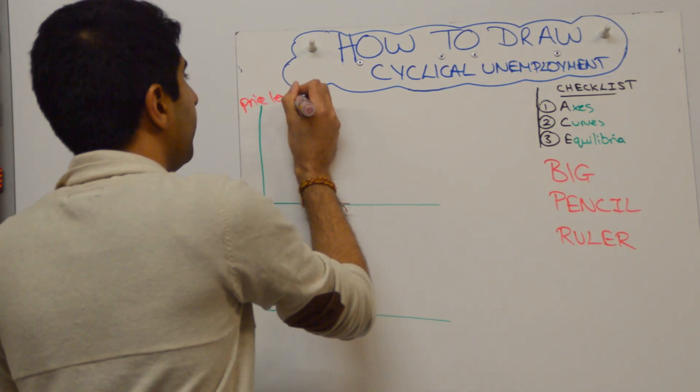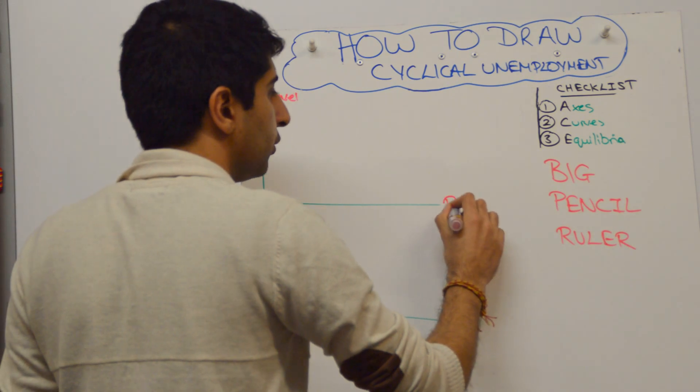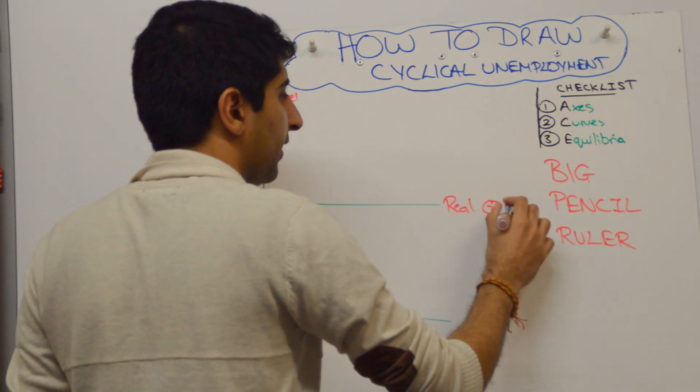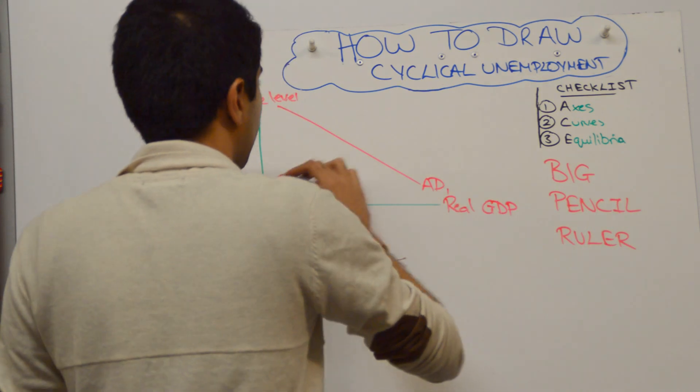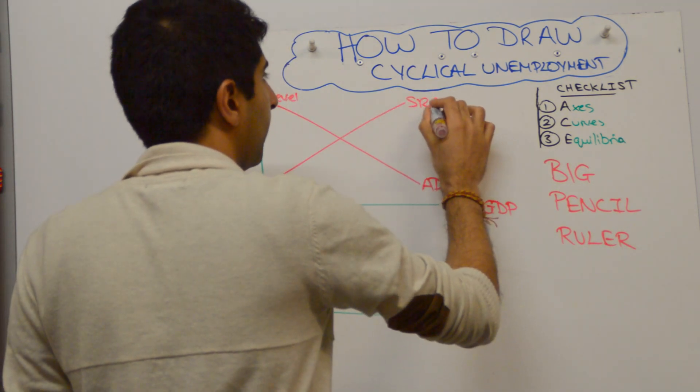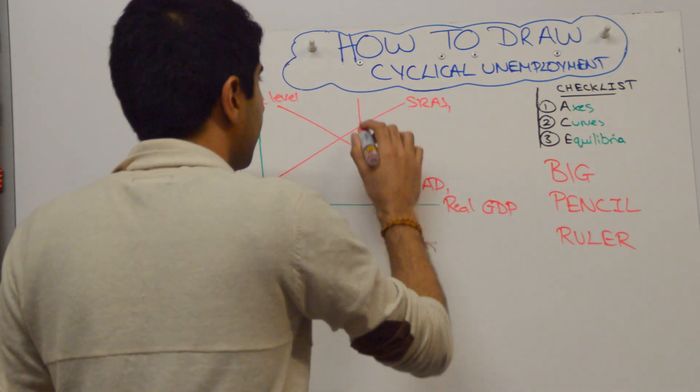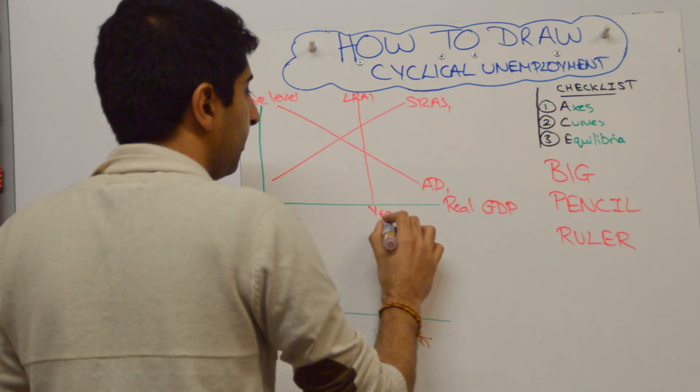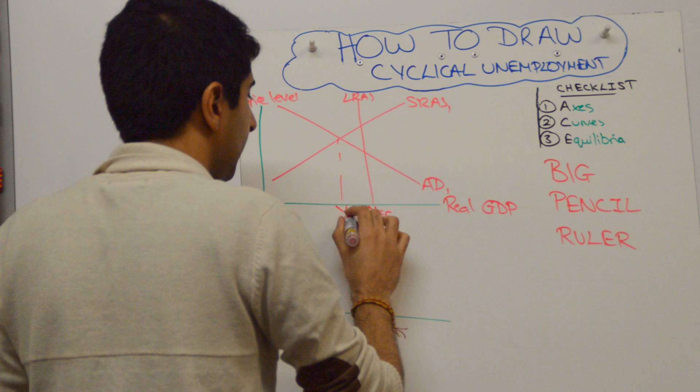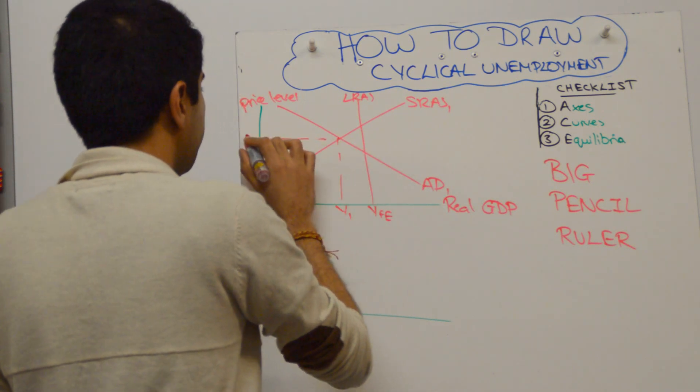Price level on the y-axis, real GDP on the x-axis. Show aggregate demand and short run aggregate supply as such. Stick on an LRAS.